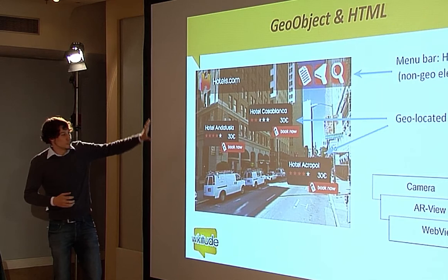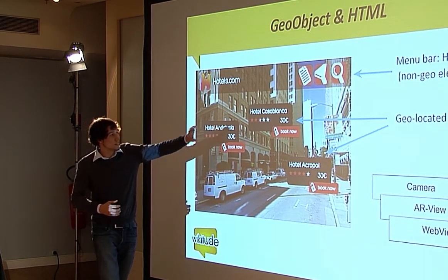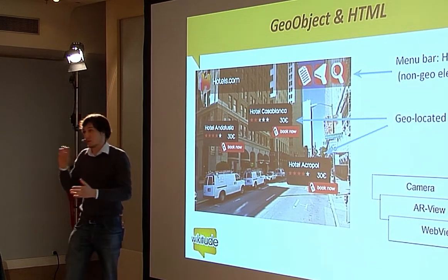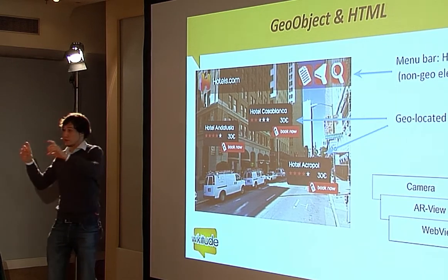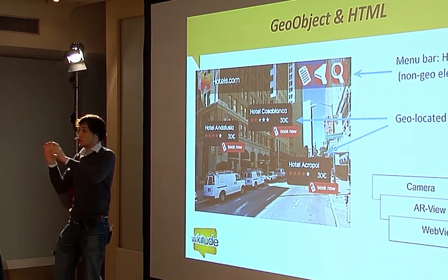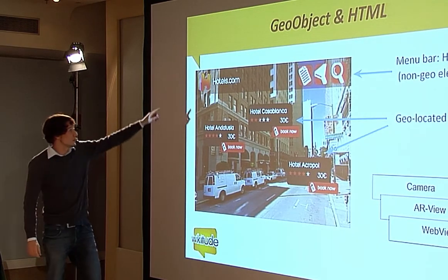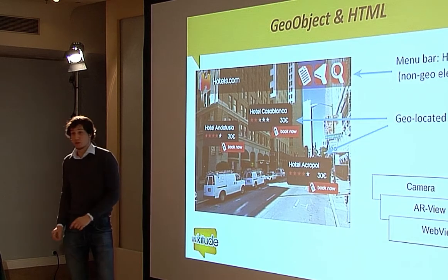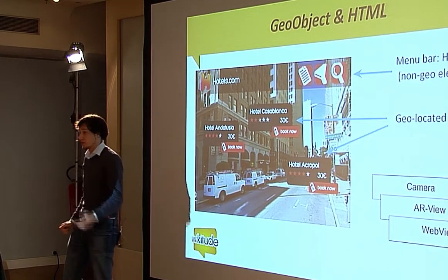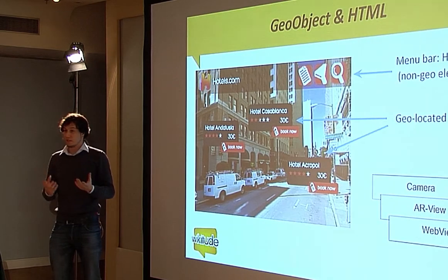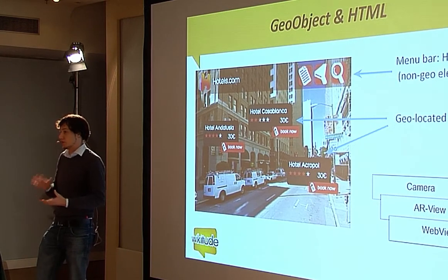Taking the hotels.com example: we have the camera in the background, we have the points where the hotels are — that's the augmented reality view — and those move when the user moves the camera because they stay on the object. Then we have the static heads-up display used in hotels.com for displaying the logo and some filter buttons. That's what's written in HTML and stays statically on top of everything.